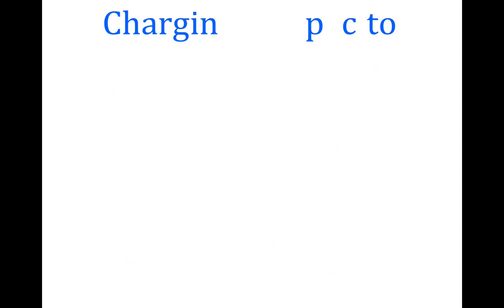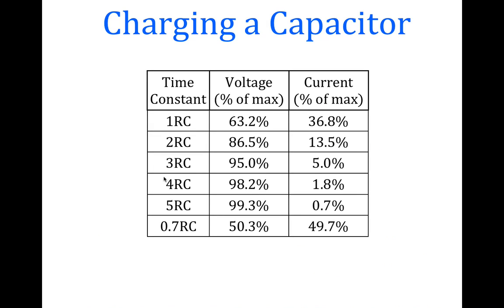We can summarize with this table: time constants one through five, with voltage expressed as a percentage of the maximum and current as a percentage of the maximum. These are the values we calculated for the increasing voltage and decreasing current. Notice that for each row, the two values add up to 100%. If we want to know when the voltage is 50% of maximum — or the current reduced by 50% — that occurs at just about 0.7 time constants.